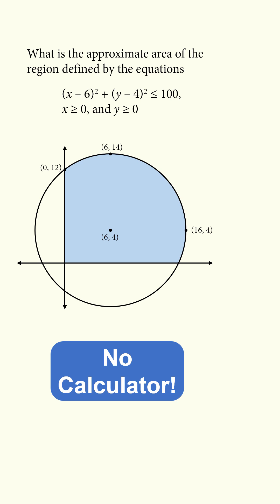Here's a tricky no-calculator question. What is the approximate area of the region defined by the equations x minus 6 squared plus y minus 4 squared is less than or equal to 100, and x and y are greater than or equal to 0?